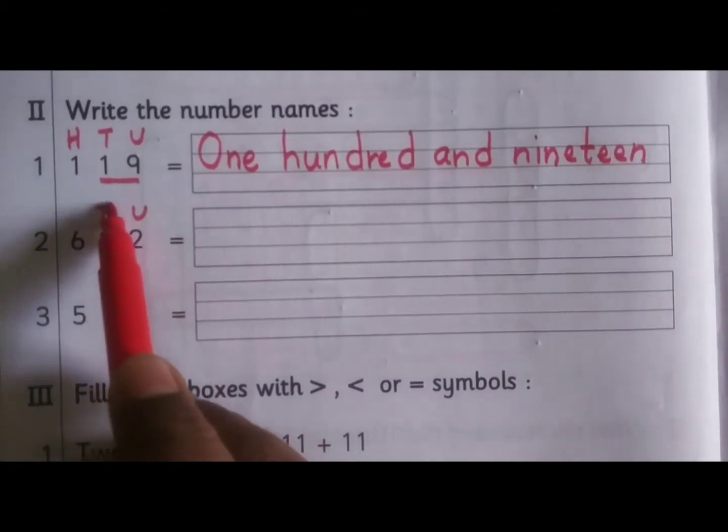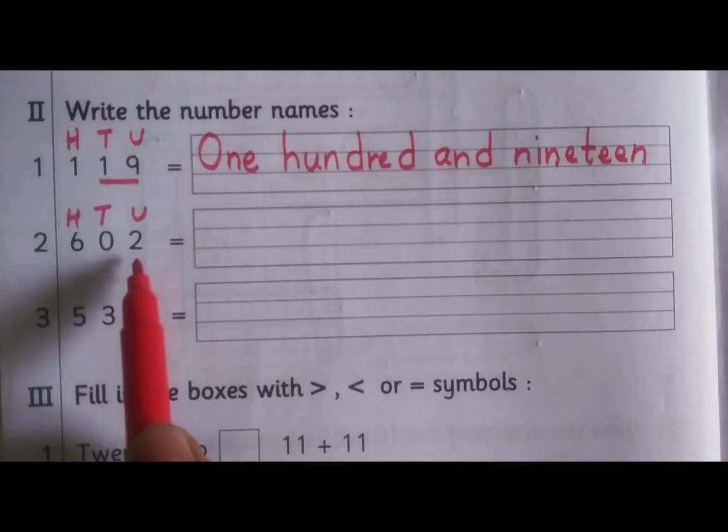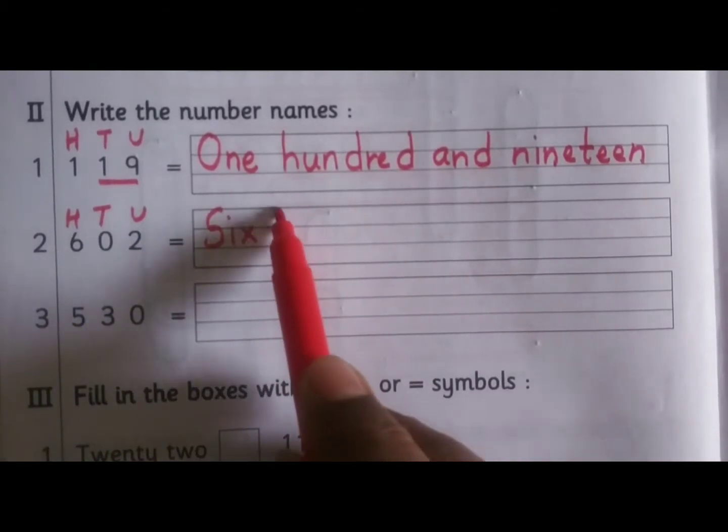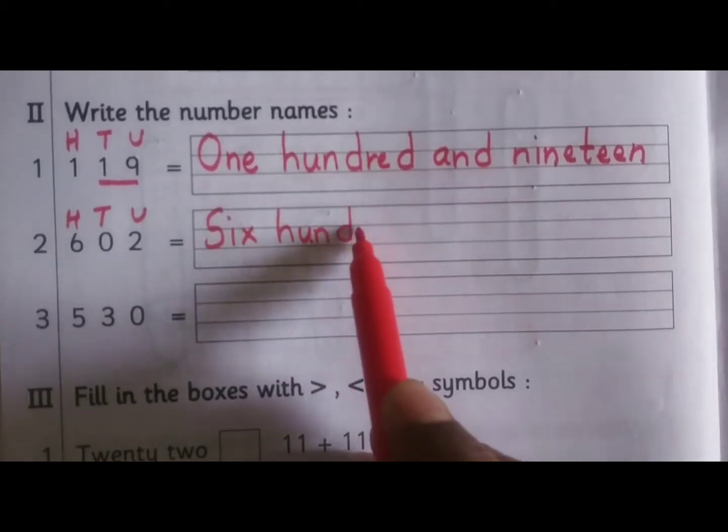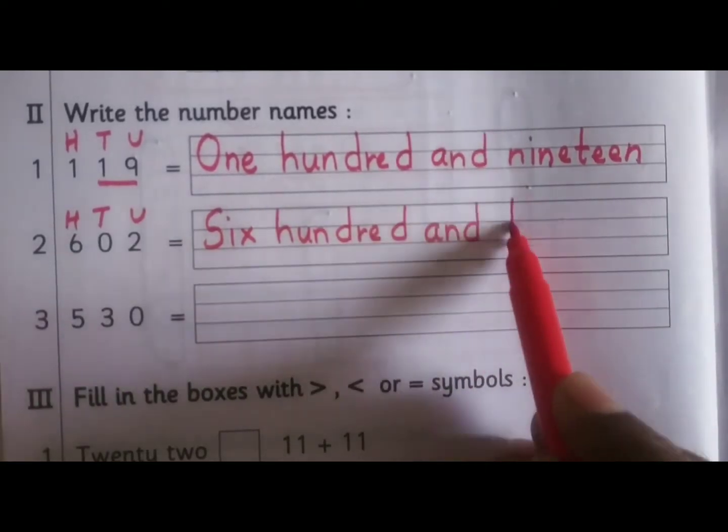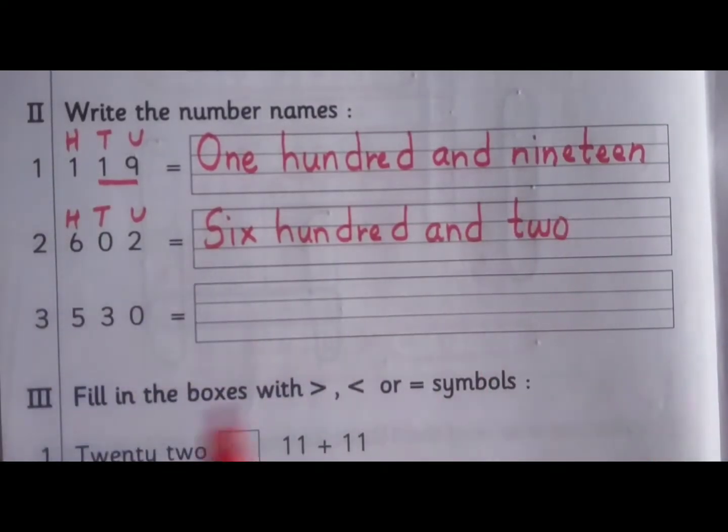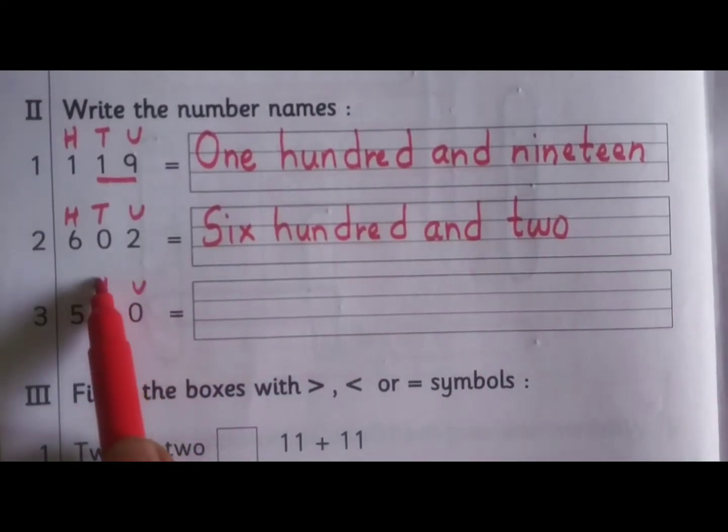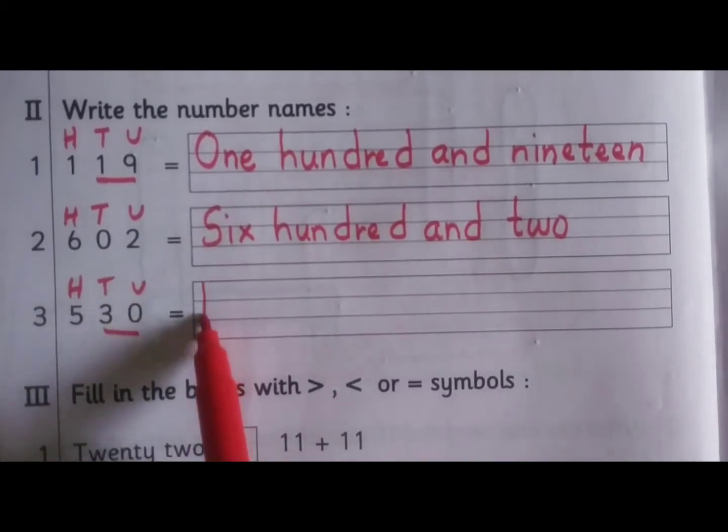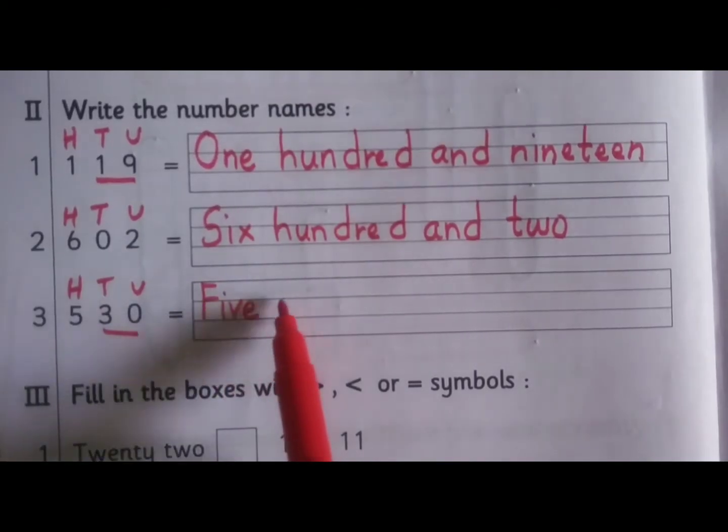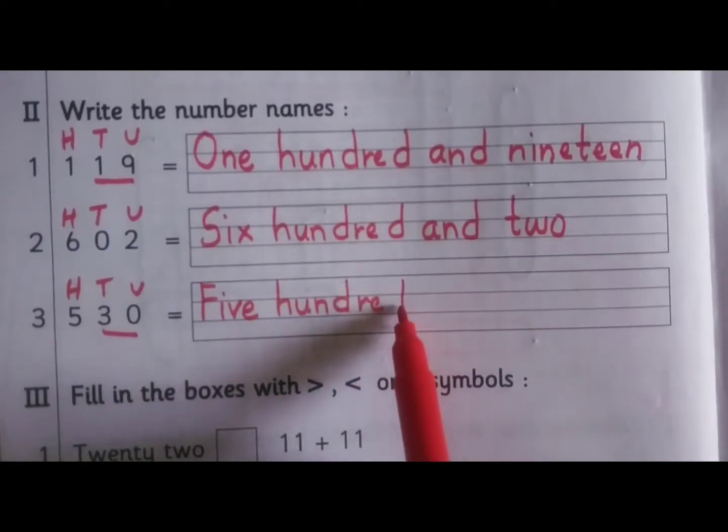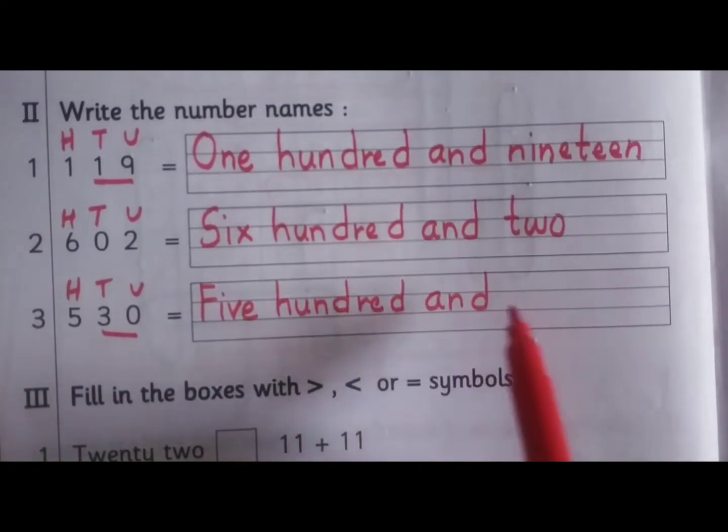Write the places, read the number: six hundred and two, six hundred and two. Write the places, read the number: five hundred and thirty, five hundred and thirty.